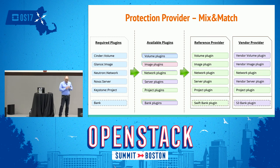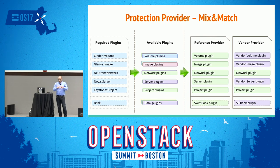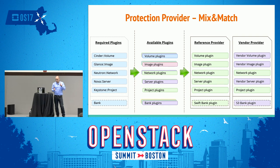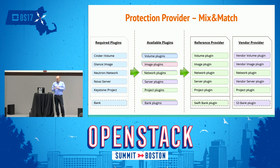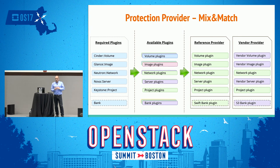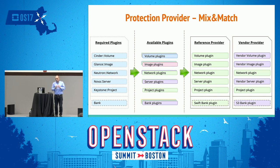The protection provider is the selection the admin makes from all the backup software, storage, and bank options they have. Let's say they have S3 for backing up data, or Dropbox or something else — they decide which to use and build a profile called the protection provider, which is the mix and match of all the options. This is what the tenant can eventually select — like a subscription plan for what the tenant can actually use.